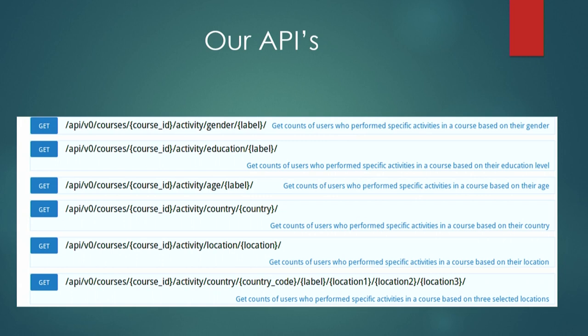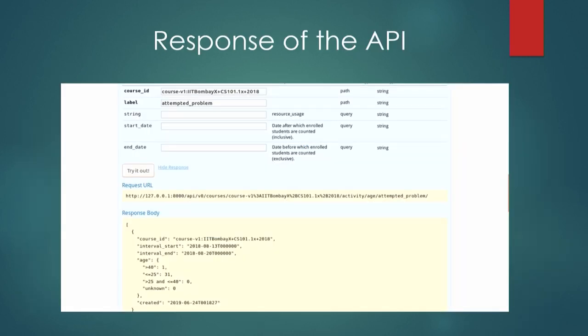Here is an example of our age API. It classifies user age into four buckets: above 40, between 25 and 40, less than 25, and unknown. By default, this API returns usage for the most recent week, but custom start and end date parameters can be provided for a custom response. The result of this API is then sent to the dashboard.